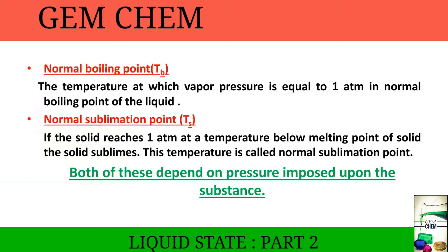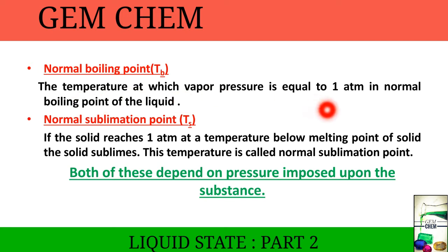When a molecule has gone to the vapor phase, the vapor pressure developed is not saturated because there is an equilibrium between liquid and vapor state. Saturated vapor pressure is when there is no further chance of additional pressure creation. The normal boiling point is the temperature at which the vapor pressure is equal to 1 atm.